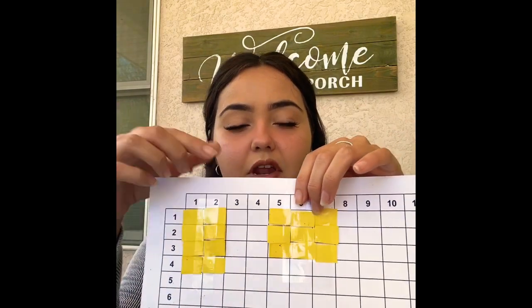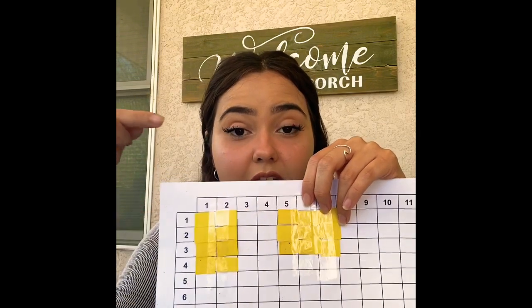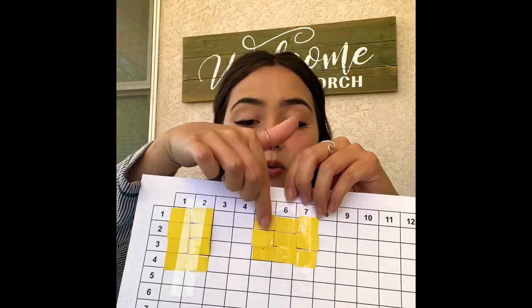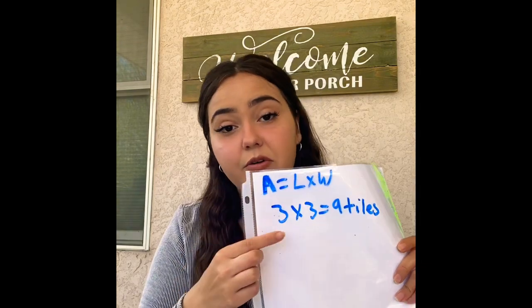We're going to do this one more time with our last shape. Our length is one, two, three, and our width is one, two, three. We know that we need to do three times three. Three times three is nine, so our answer to this equation is nine tiles, because three times three is also length times width.